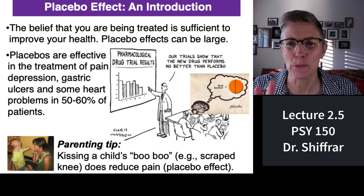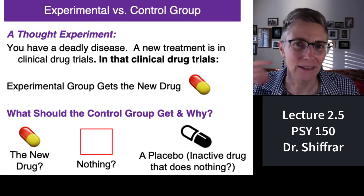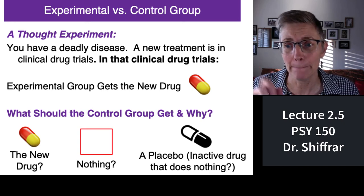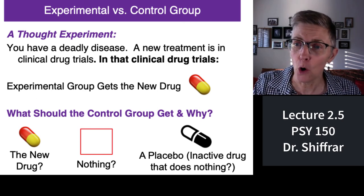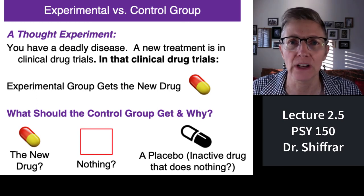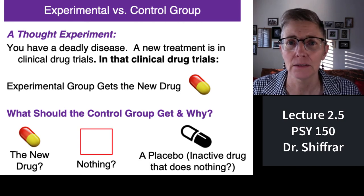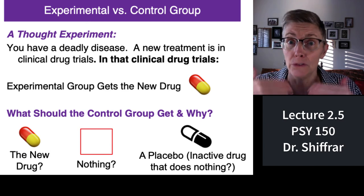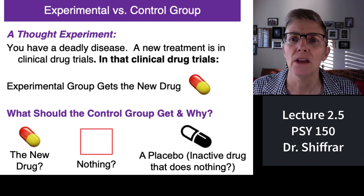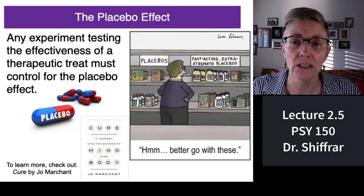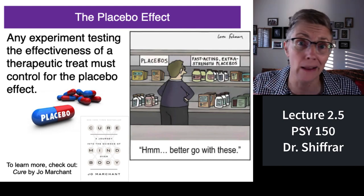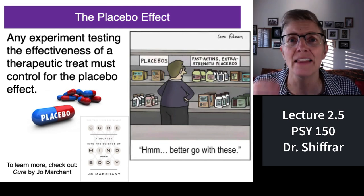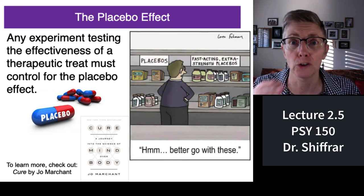Here's a thought experiment. You've got a deadly virus — let's say COVID. The experimental group gets the real treatment. What should you give the control group: nothing, or a placebo — an inactive, inert drug that doesn't do anything? The best study is to give them the placebo, because then both the experimental group and the placebo group believe to the same extent that they are being taken care of. Any experimental method in psychology, biology, biochemistry, or psychopharmacology looking for effective new treatments has to have a placebo condition — a proper control condition.